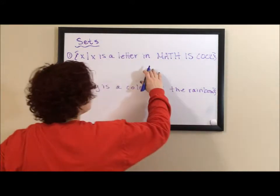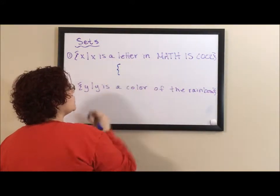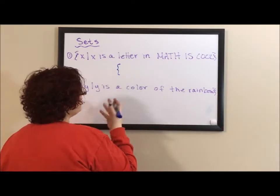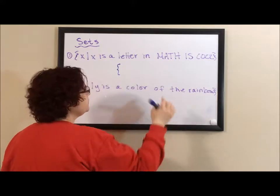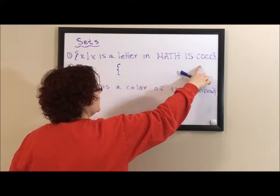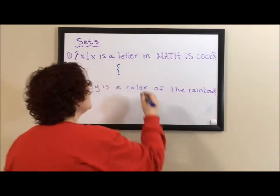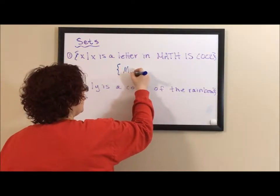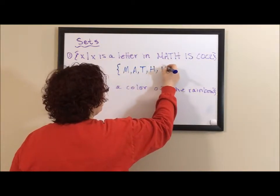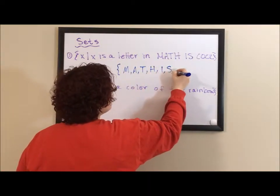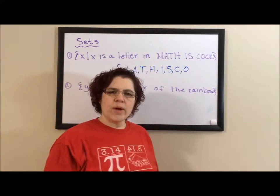So if I wanted to do the roster style for 'math is cool,' I start with a curly bracket. Curly brackets are the grouping symbol for sets, and I start listing off the letters as a comma-delimited list — and they're all capital, like passwords, it's case sensitive. So I have capital M, comma a, comma t, h...